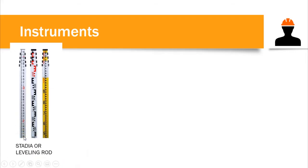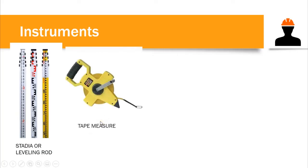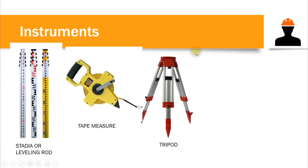Another essential instrument is the stadia rod, or leveling rod — essentially a large ruler held or positioned vertically, which the surveyor sights to determine the height from the ground. We also have the tape measure for determining horizontal distances between points.